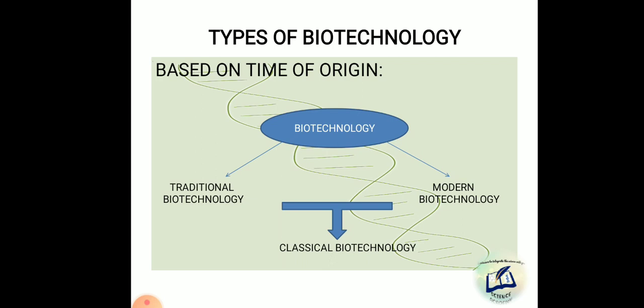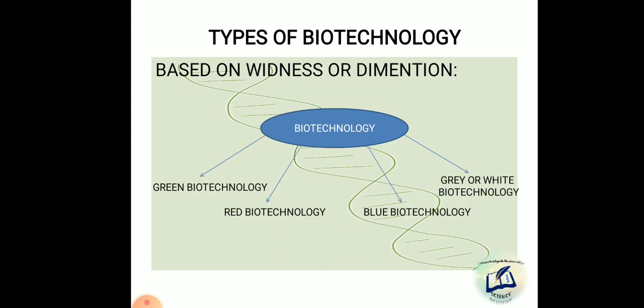The main revolution of biotechnology started from the era of classical biotechnology. Now we will divide biotechnology based on wideness or dimensions. We can divide it into four types: green biotechnology, red biotechnology, blue biotechnology, and grey biotechnology.